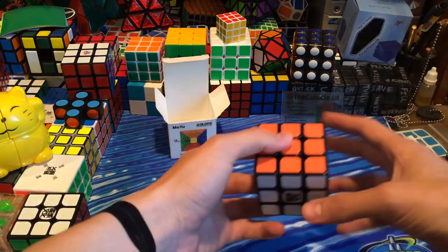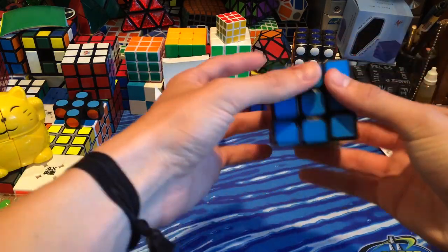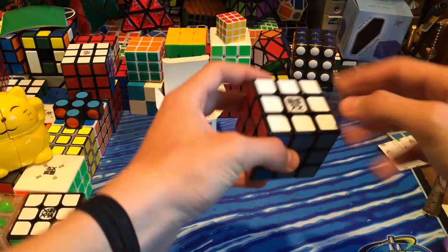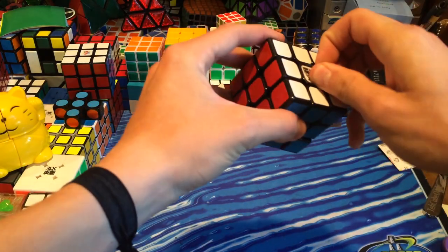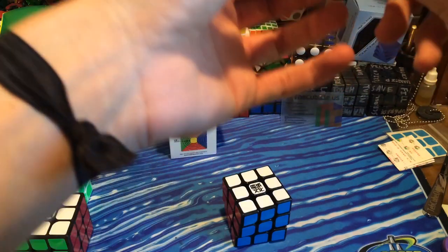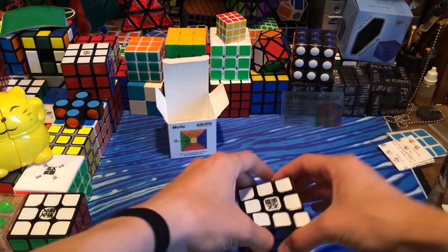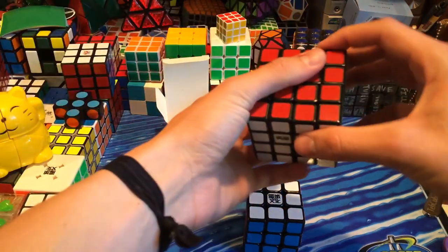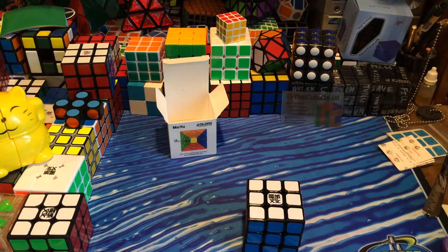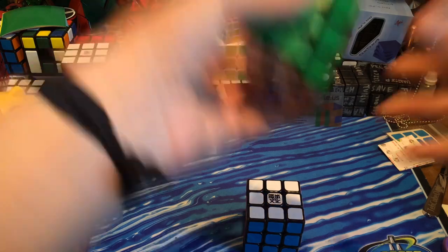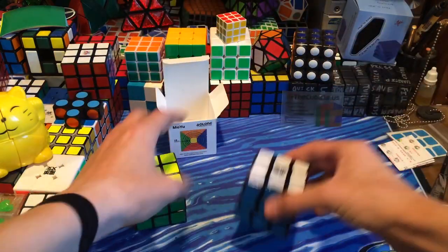So it comes with a little packet, as always. And right off the bat, it feels a lot different than any Moyu puzzle. Let me also take off this little clear sticker. It feels kind of like one of the 4x4s, I guess. Like the pieces are more rounded compared to this Moyu Weilong. Everything here feels really cubic. This feels a little more rounded.